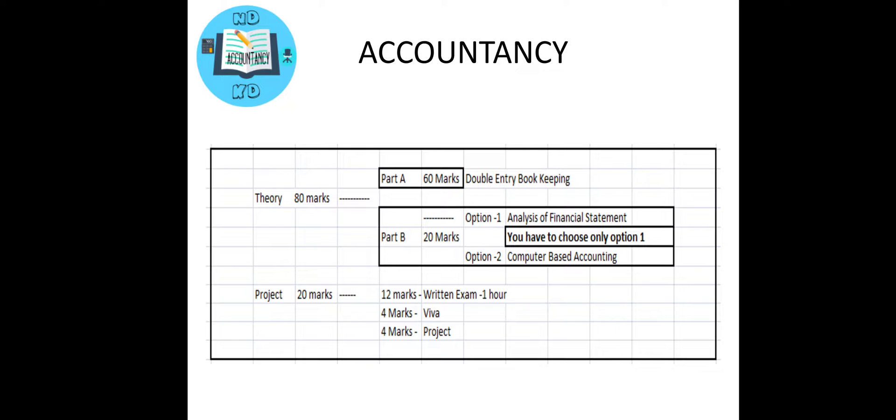The theory paper is again divided into two parts: Part A and Part B. Part A contains the double entry bookkeeping for 60 marks, and Part B is divided into two parts or options.